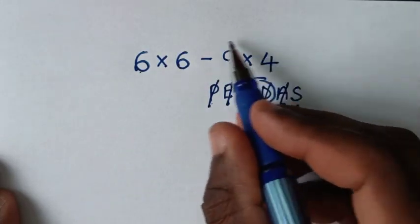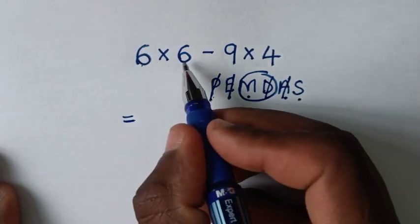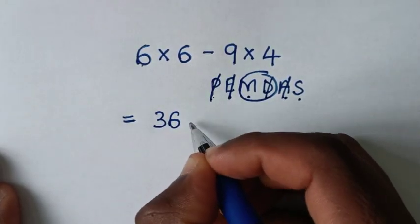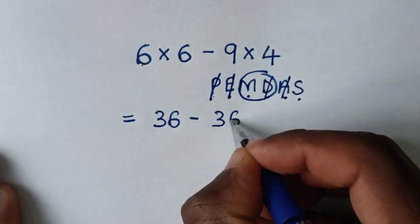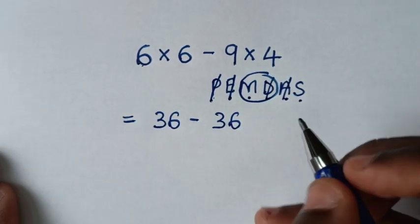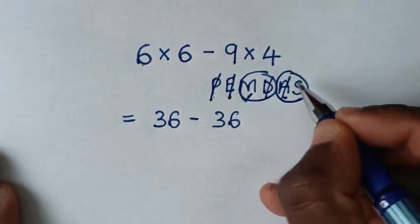It will be equal to: 6 times 6 is 36, then minus 9 times 4 is 36. We've already dealt with these multiplications.